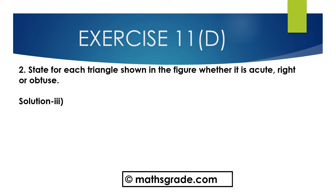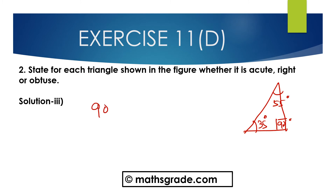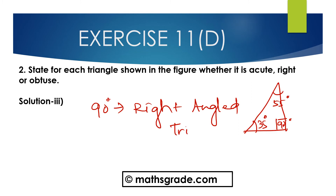Now question number 3. First draw the given triangle. This is 90 degrees, this is 55 degrees, and this is 35 degrees. In this triangle, one of the angles is 90 degrees. We know any triangle whose one angle is 90 degrees, that is a right angle triangle. So this is a right angle triangle.